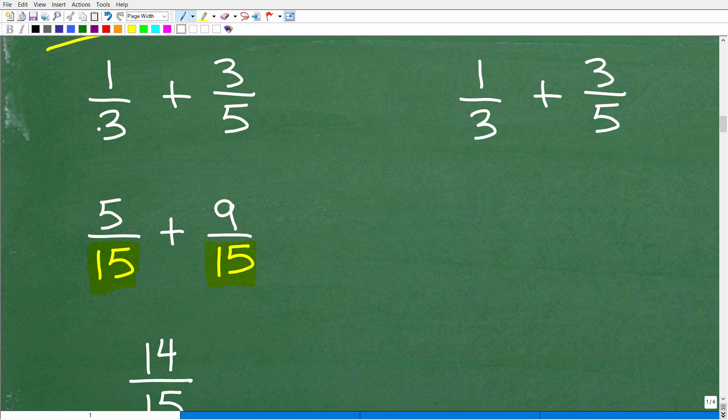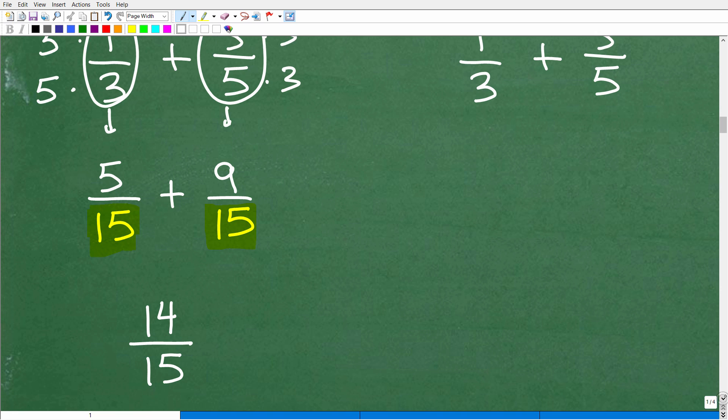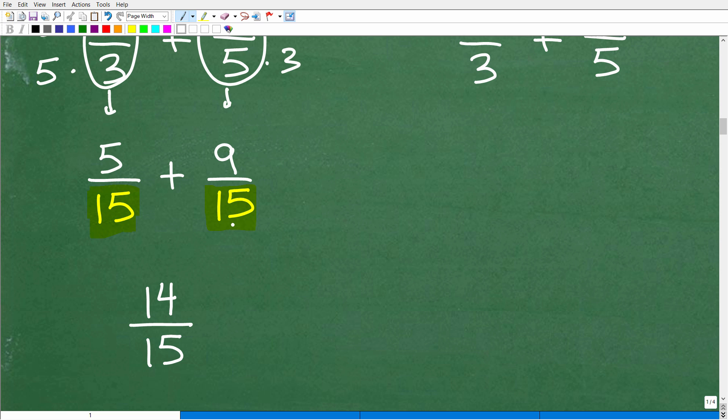Okay, so I need to change this 3 to a 15. So I could do that by multiplying by 5. But if I multiply the denominator by 5, I'm going to multiply the numerator by 5. So that's how I get 5/15. Then here I'm going to multiply this by 3 to get a 15. But I could also multiply the numerator by 3 as well. So I'm left with 5/15 + 9/15. It's the same thing. These fractions are equivalent to 1/3 and 3/5. However, I just wrote them such that they have the lowest common denominator.